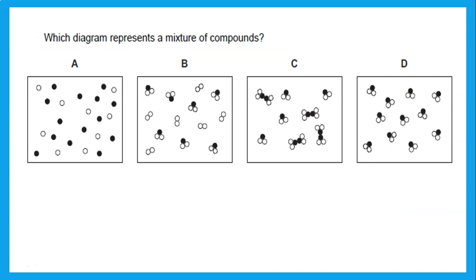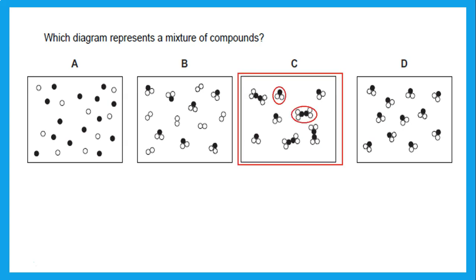Which diagram represents a mixture of compounds? A compound means two or more different elements chemically combined together. Choice A does not apply. Choice B is a mixture of elements and compounds — if both atoms are the same that's an element; if they're different that's a compound. So B is mixed. Choice C shows two different types of compounds — different elements combined together — so C is the mixture of compounds. In D, all molecules are the same compound, so that is not a mixture.